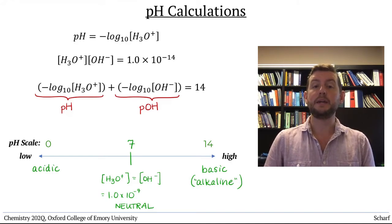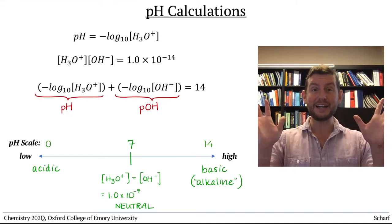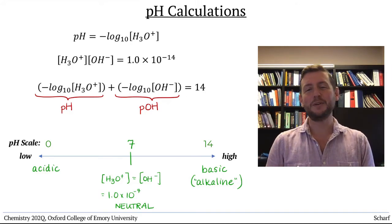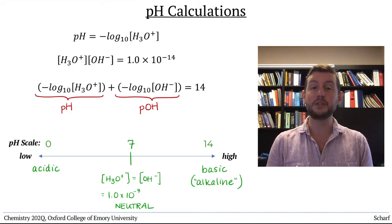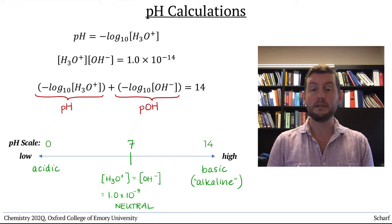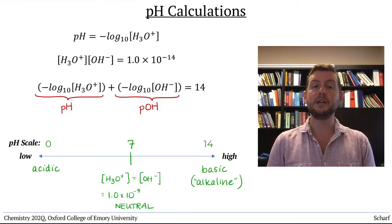So how do we calculate the pH of a solution? We use ICE tables! If we know the concentration of a particular acid or base, and we know its Ka or Kb, or pKa or pKb, we can calculate the equilibrium concentration of H3O+, and therefore the pH of the solution.